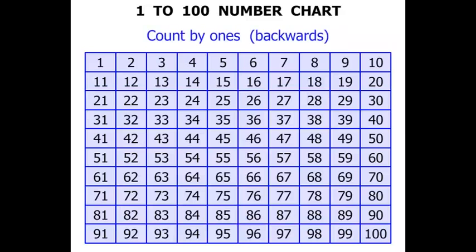Let's also look at counting by ones but this time backwards. So we start at 57: 56, 55, 54, 53, 52, 51, 50, 49, 48, 47, 46, 45. And again we could continue on as far as we needed to.